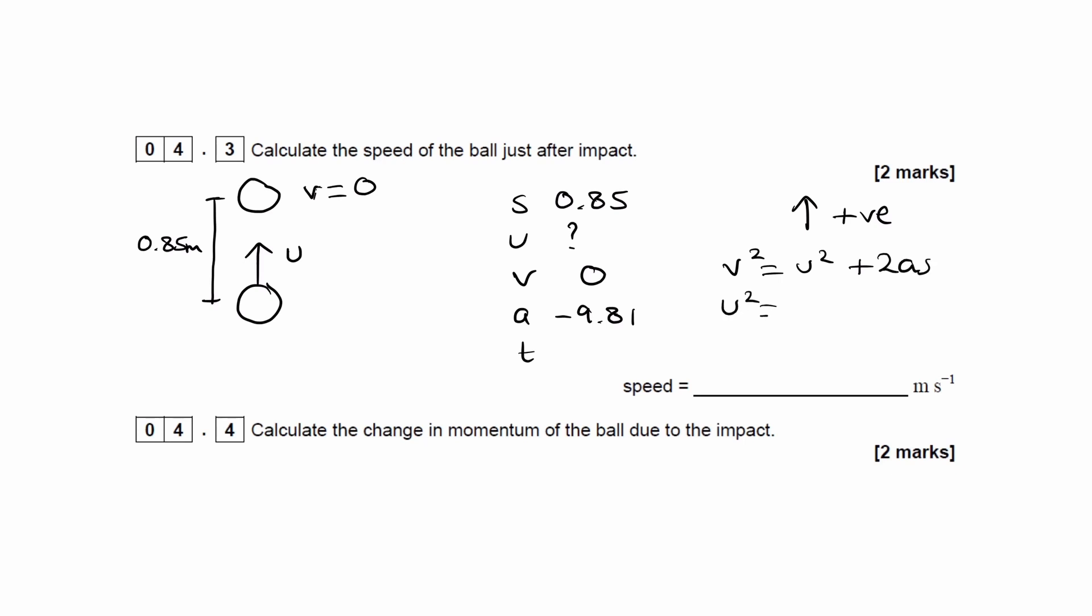u² is then, so v is 0, so v² is 0. So u² is -2as, which is -2 × -9.81 × 0.85. So if we type this in, and then we square root both sides, because that's what u² is equal to, so then we can square root both sides to get u. And we end up with 4.08. So that is the answer to 4.3.